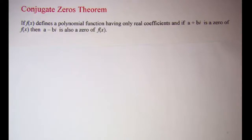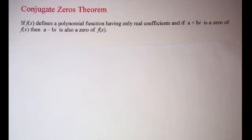In this video we will be looking at the conjugate zeros theorem. That theorem says that if a plus bi is a zero of f of x, then a minus bi is also a zero of f of x.